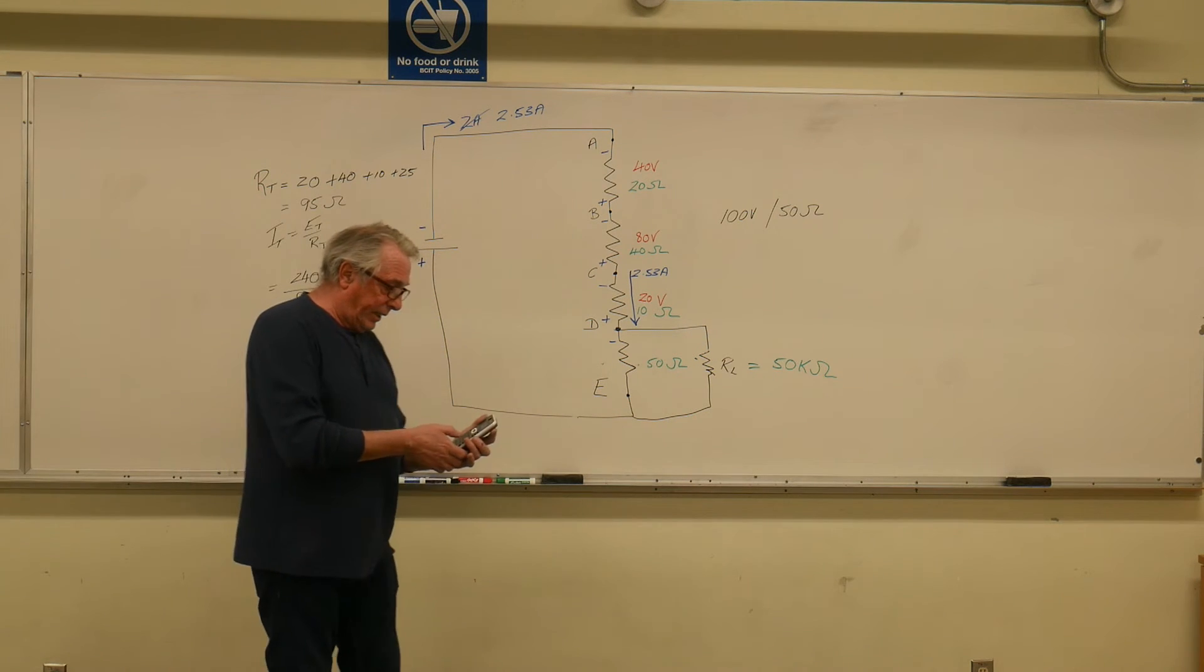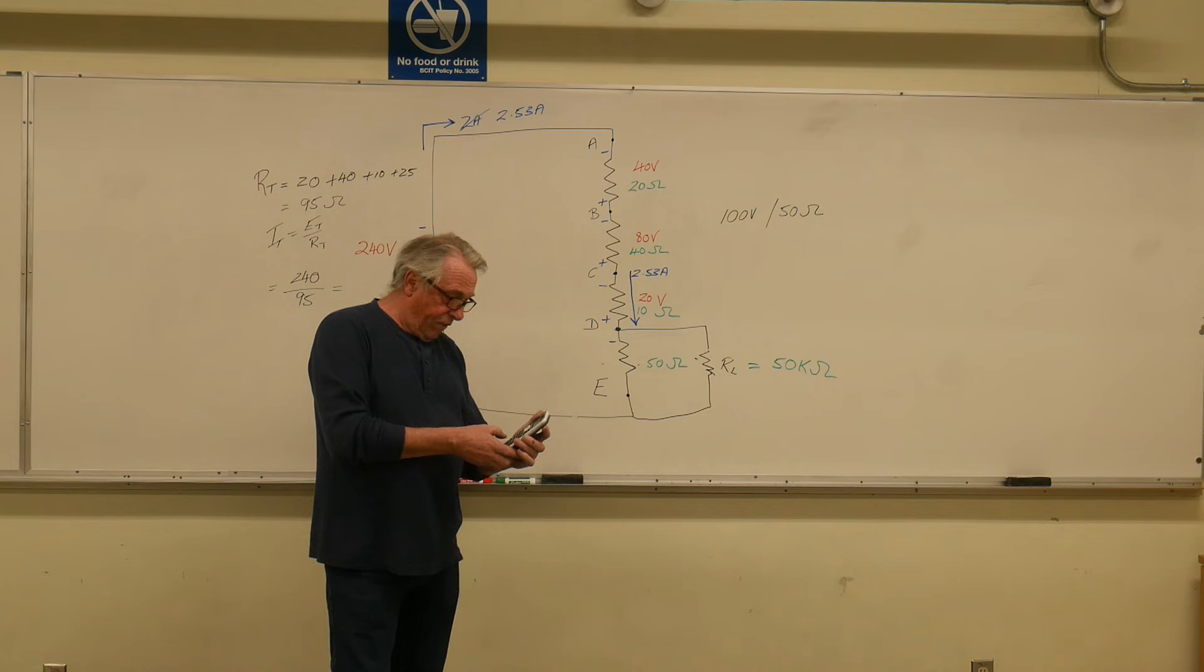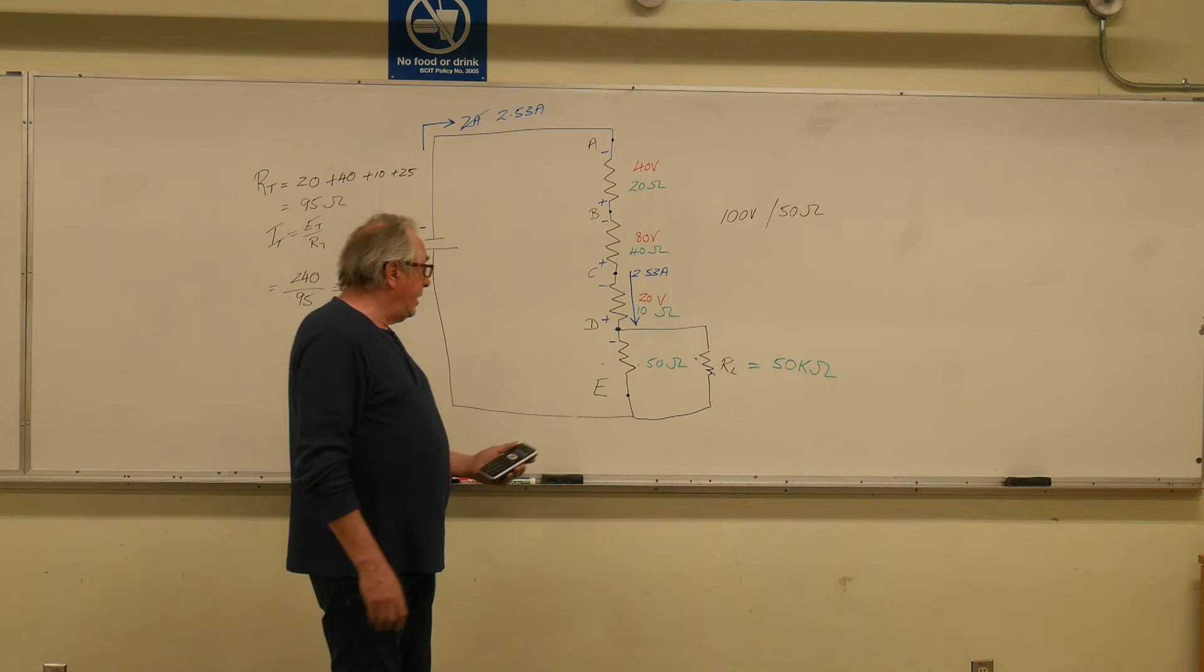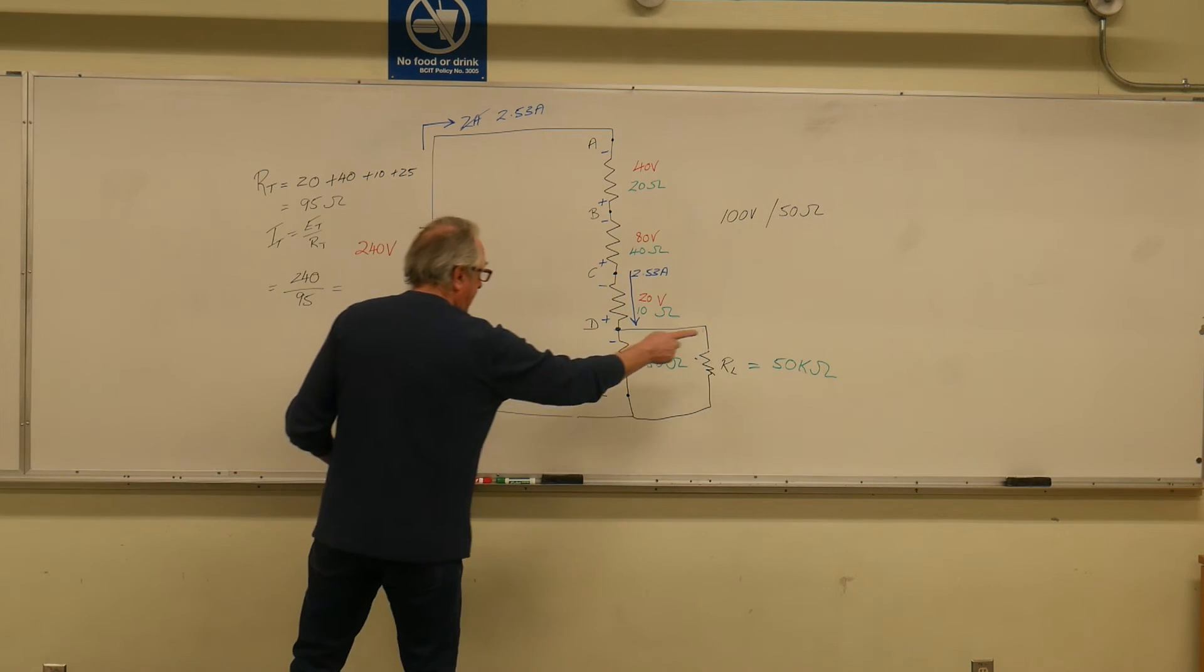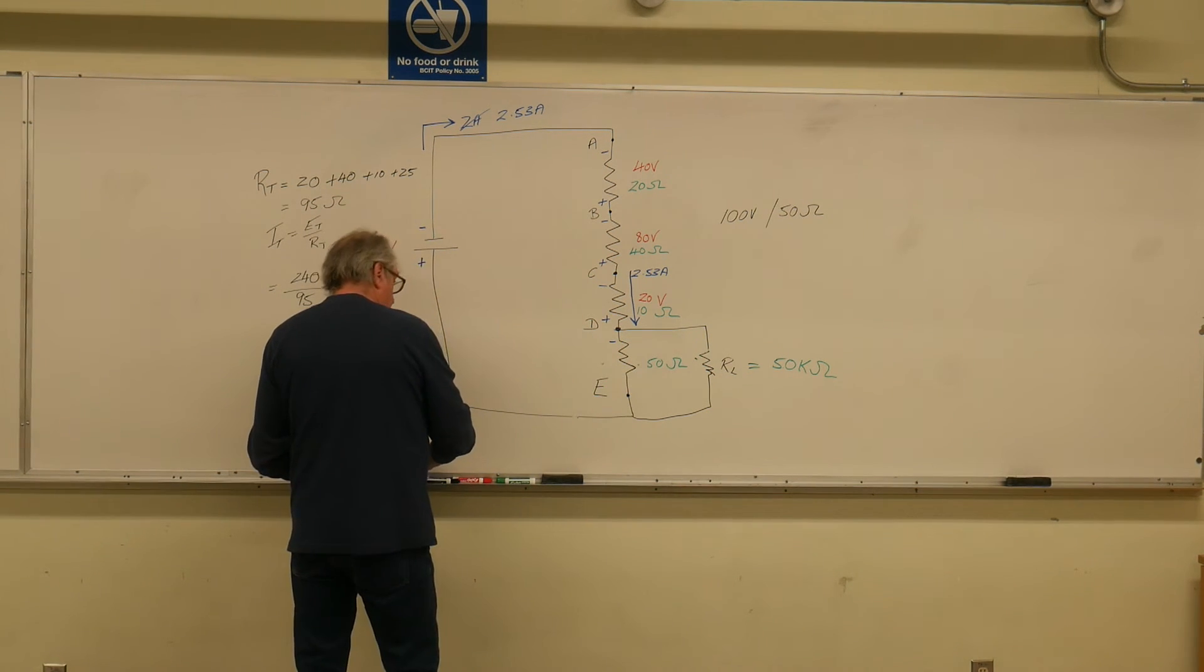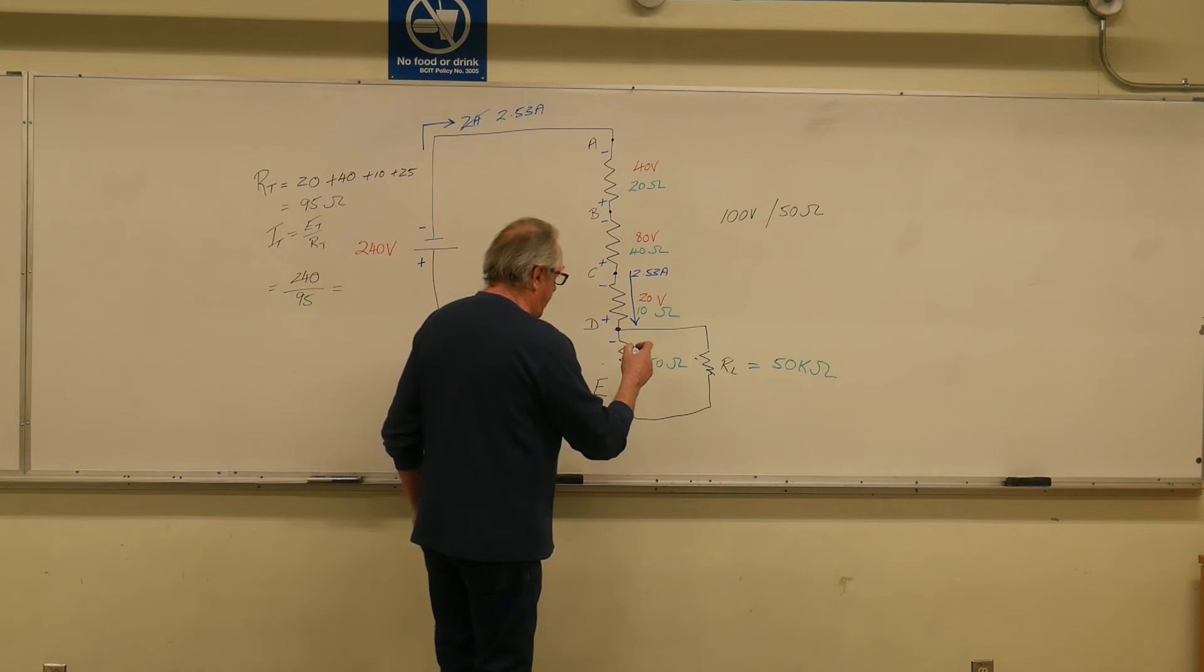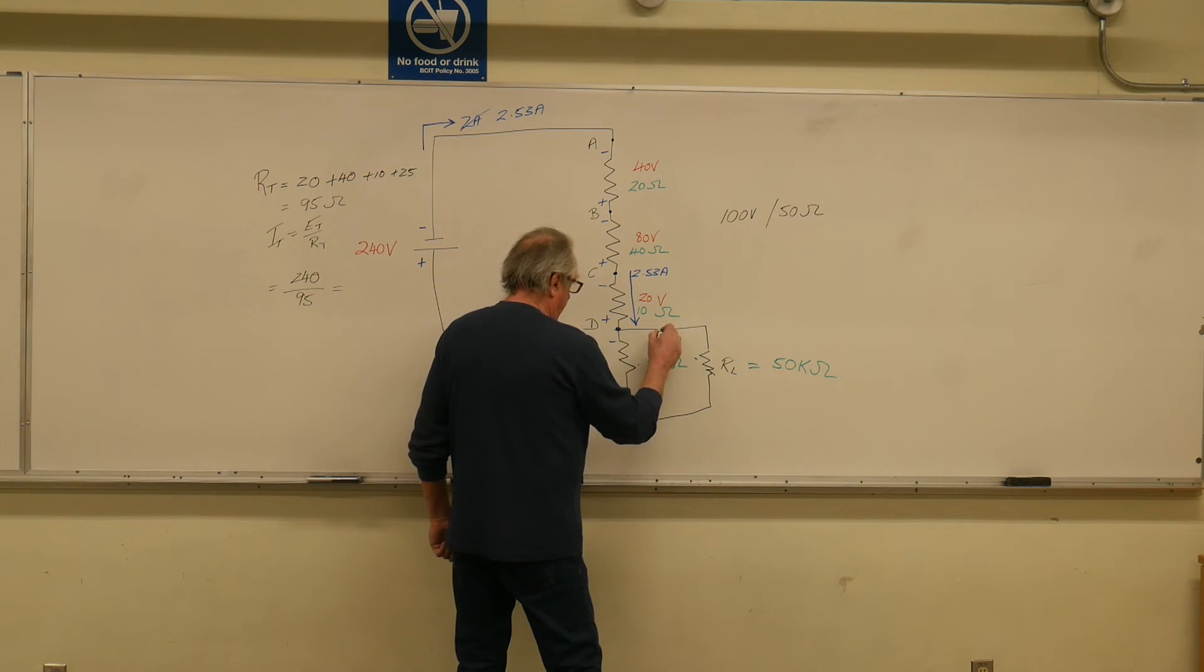What is 50k in parallel with 50 ohms? Well, I'd like you to do it on your calculator. I'll do it. 5,000 inverse plus 50, inverse equals, inverse. And I get this in parallel with that. If I were to put the equivalent resistance down here, I'll put it here, that's my equivalent resistance would be 49.95 ohms.